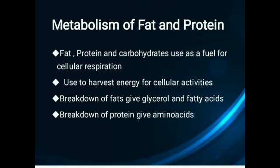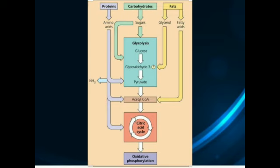Here the metabolism of fats and proteins is described. By breakdown of fats, proteins, and carbohydrates we obtain energy for cellular activities. Breakdown of fats gives glycerol and fatty acids, and breakdown of protein molecules gives amino acids. This diagram shows how proteins, carbohydrates, and fats are broken down into their basic units and enter the processes of glycolysis, acetyl-CoA formation, the citric acid cycle, and oxidative phosphorylation to produce ATP.